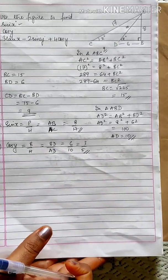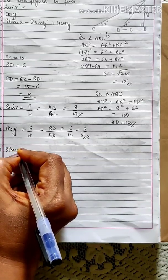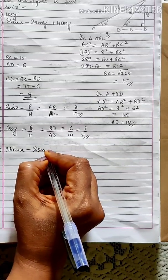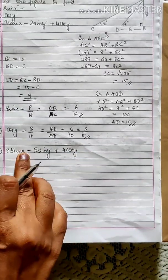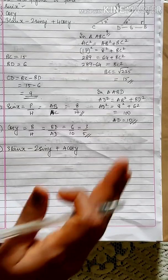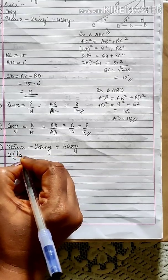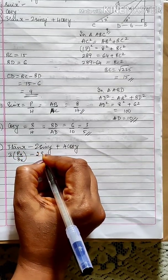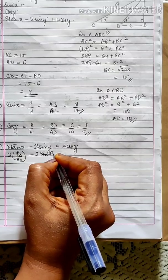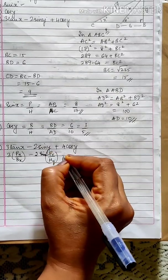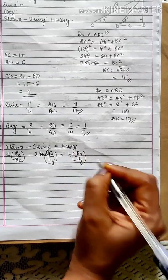So cos y equals 6 by 10, simplified to 3 by 5. Moving on to the third expression: 3 tan x minus 2 sin y plus 4 cos y. The ratio for tan is perpendicular by base with respect to angle x, minus 2 times sin which is perpendicular by hypotenuse, plus 4 times base by hypotenuse with respect to angle y.